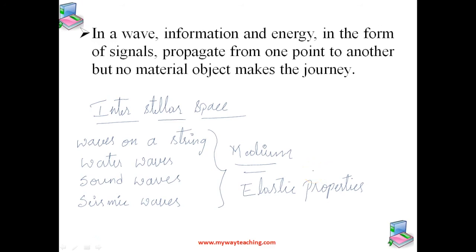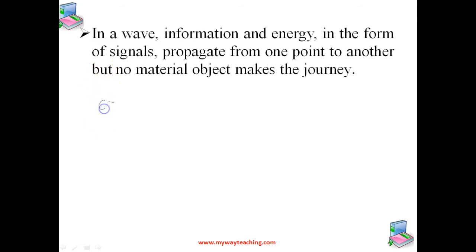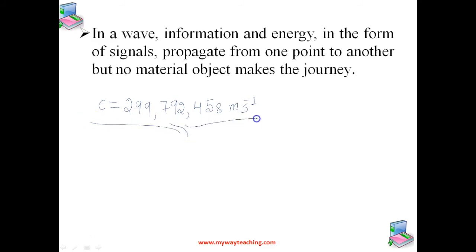Electromagnetic waves do not necessarily require a medium — they can travel through vacuum. Examples include light waves, radio waves, and X-rays. In vacuum, all electromagnetic waves have the same speed c, which is approximately 299,792,458 meters per second.